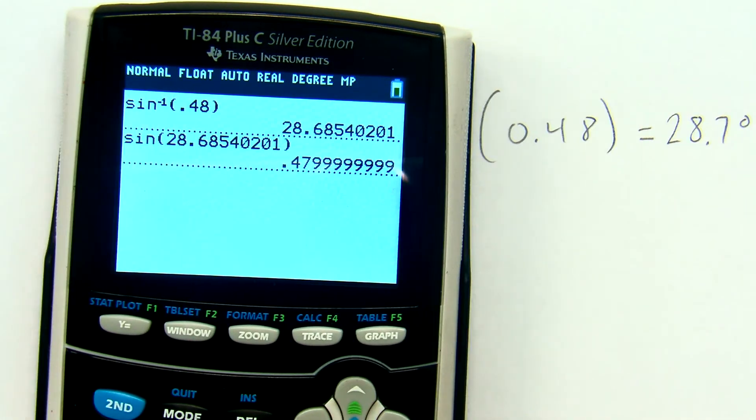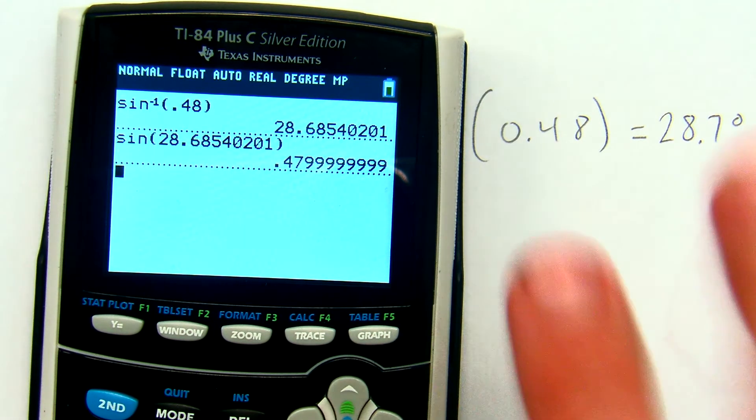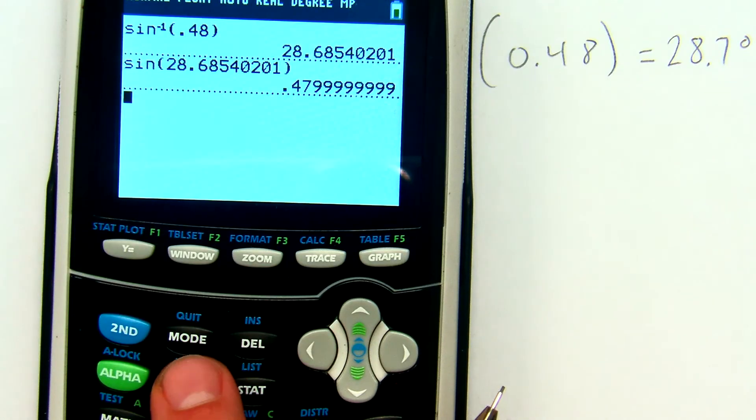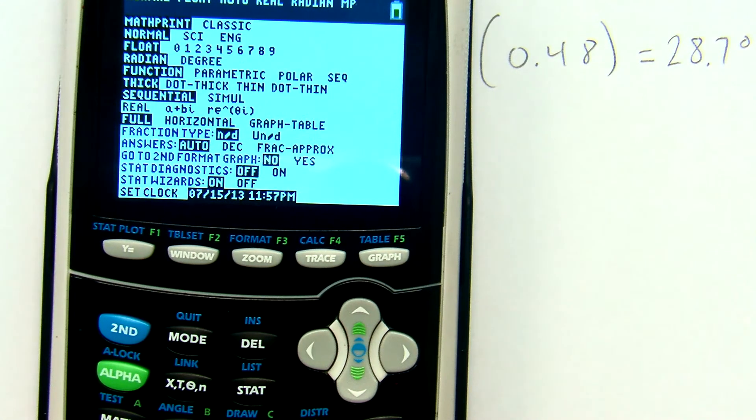Now, I may also want to give my answer in radians. So let's try that. First I'll need to switch from degrees to radians. I'll hit the mode button, and I'll change to radians from degrees, and quit.